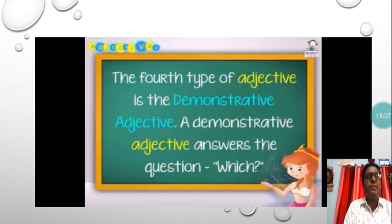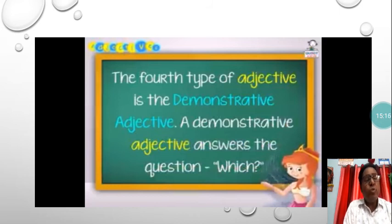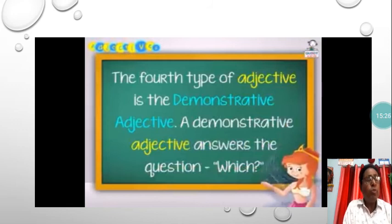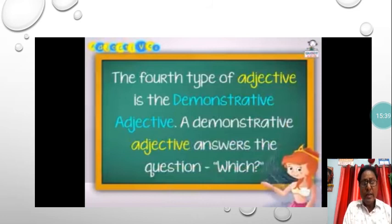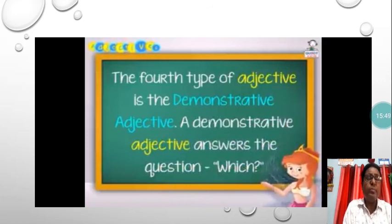Let us now learn the fourth type of adjective: demonstrative adjective. Demonstrative adjective answers the question which. Demonstrative adjectives are those adjectives which indicate people or things which are far or near to us.